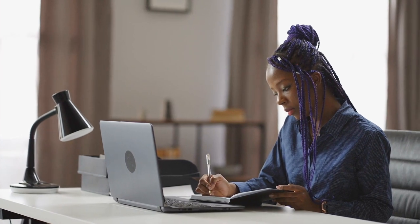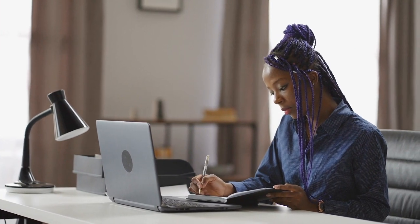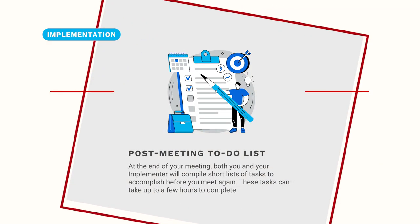Many clients ask how much time they should budget to complete the client to-do list each week. Of course, this depends on the project specifics, but on average we see clients spend between one to three hours each week working on project tasks.